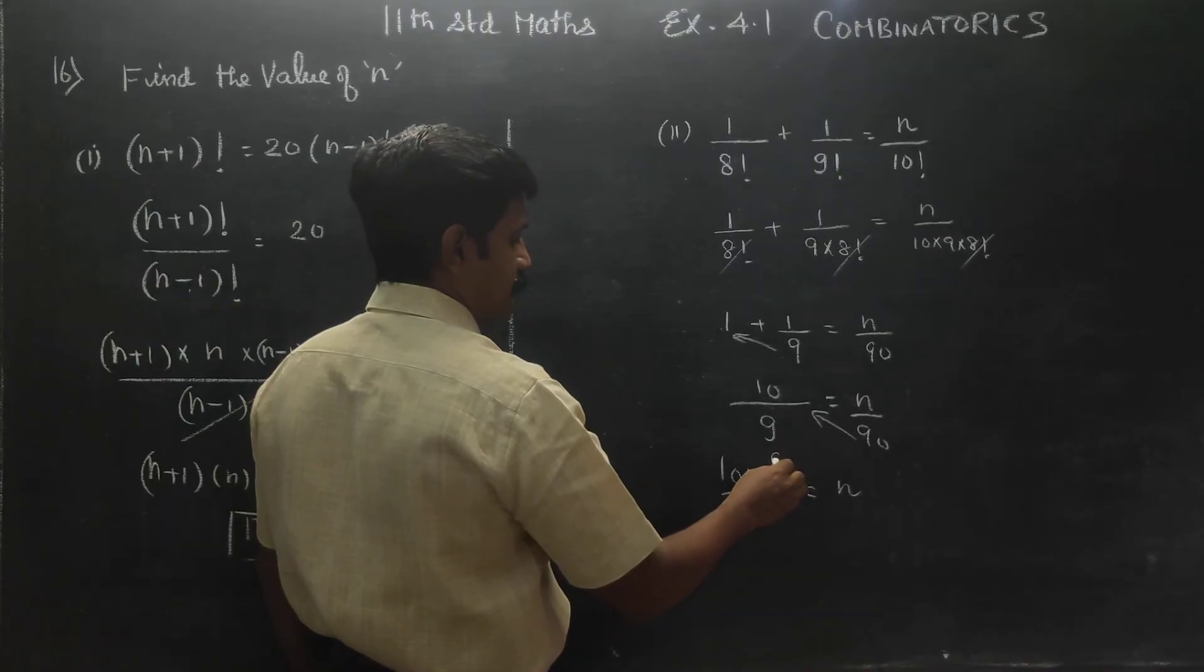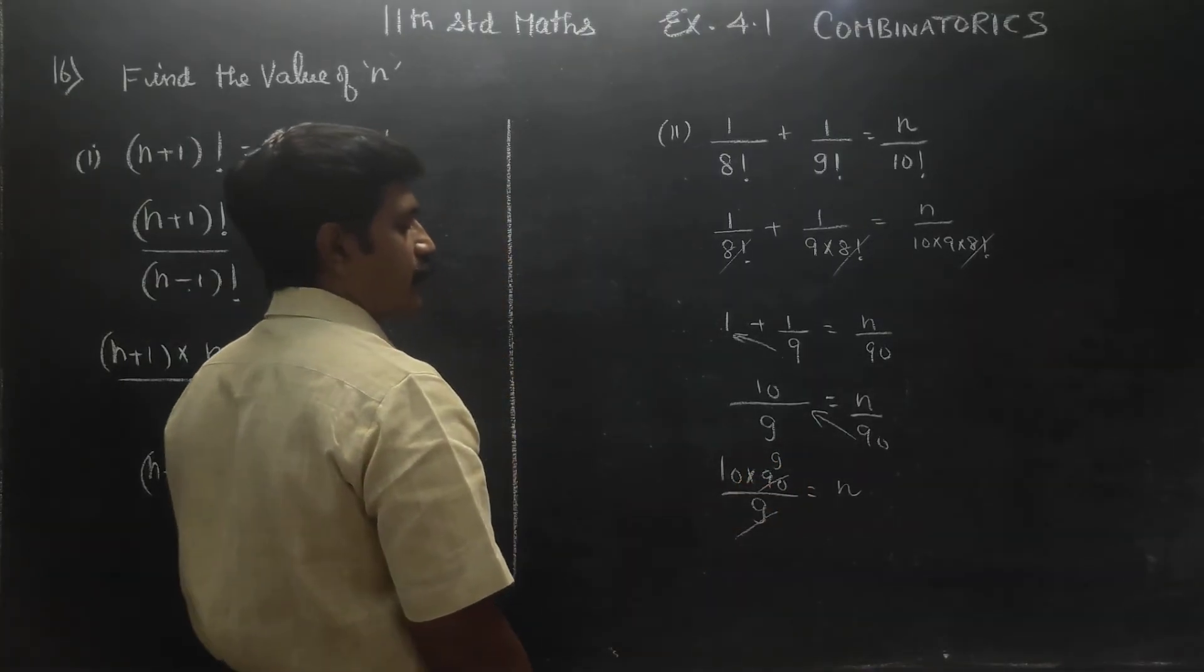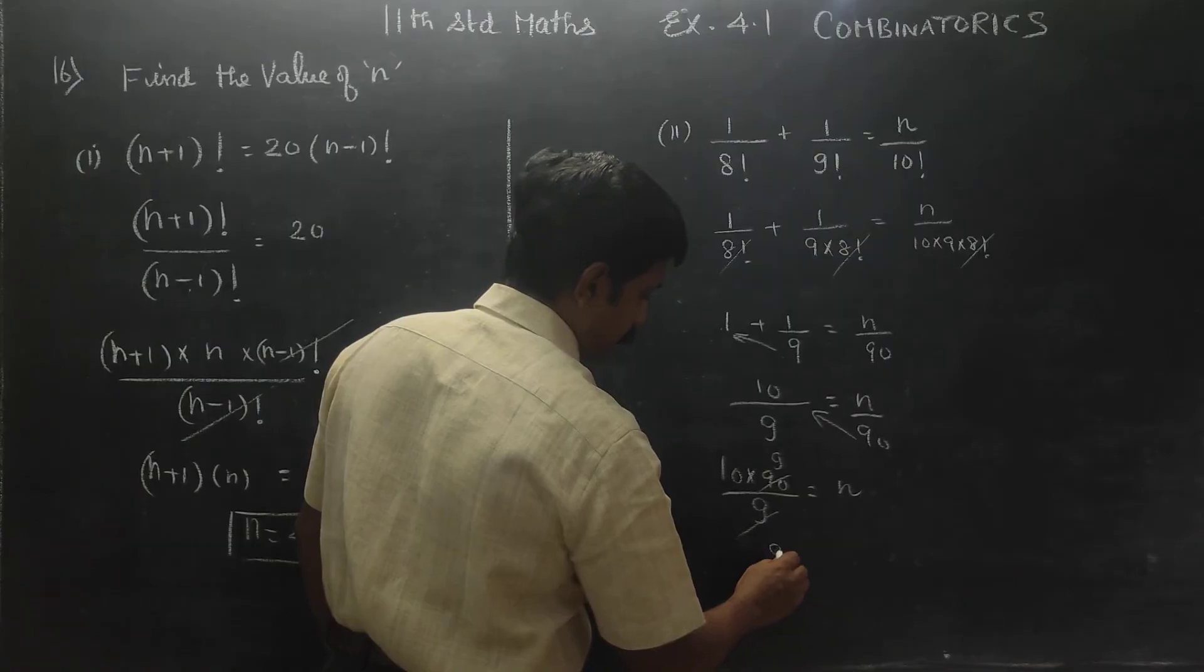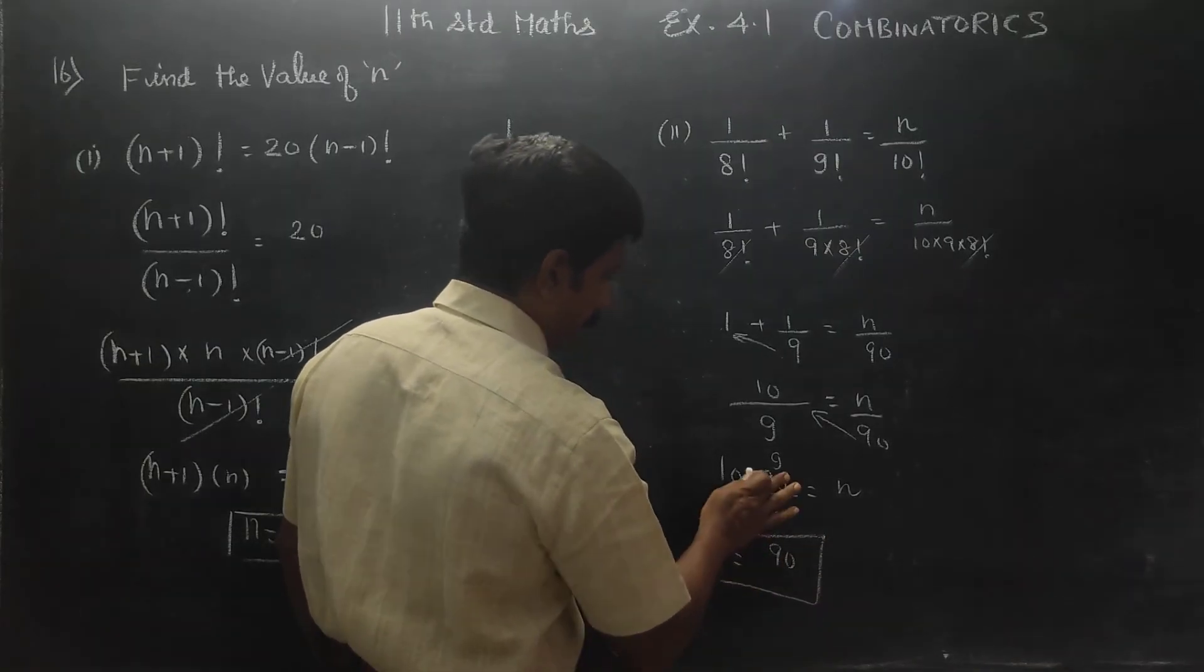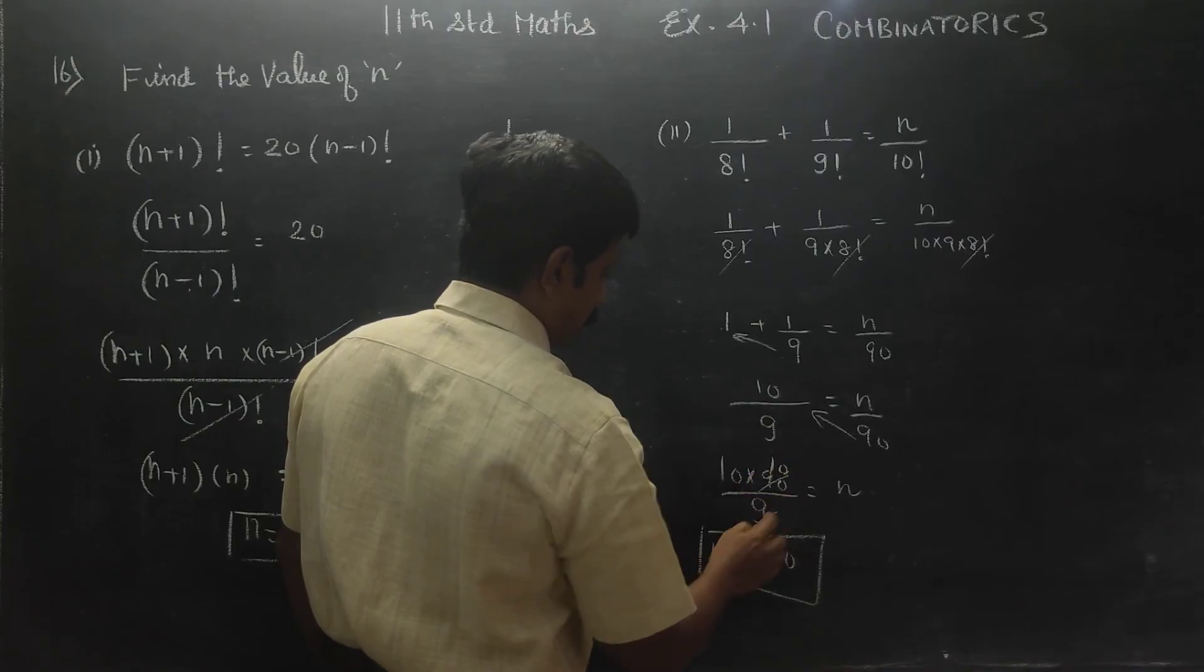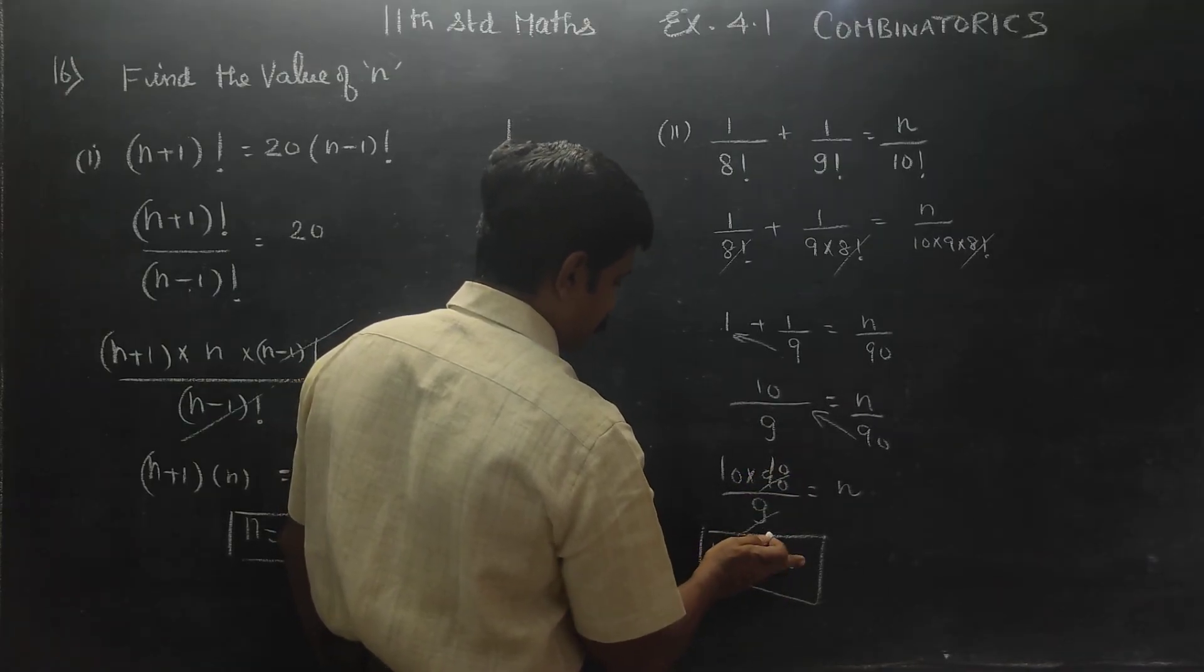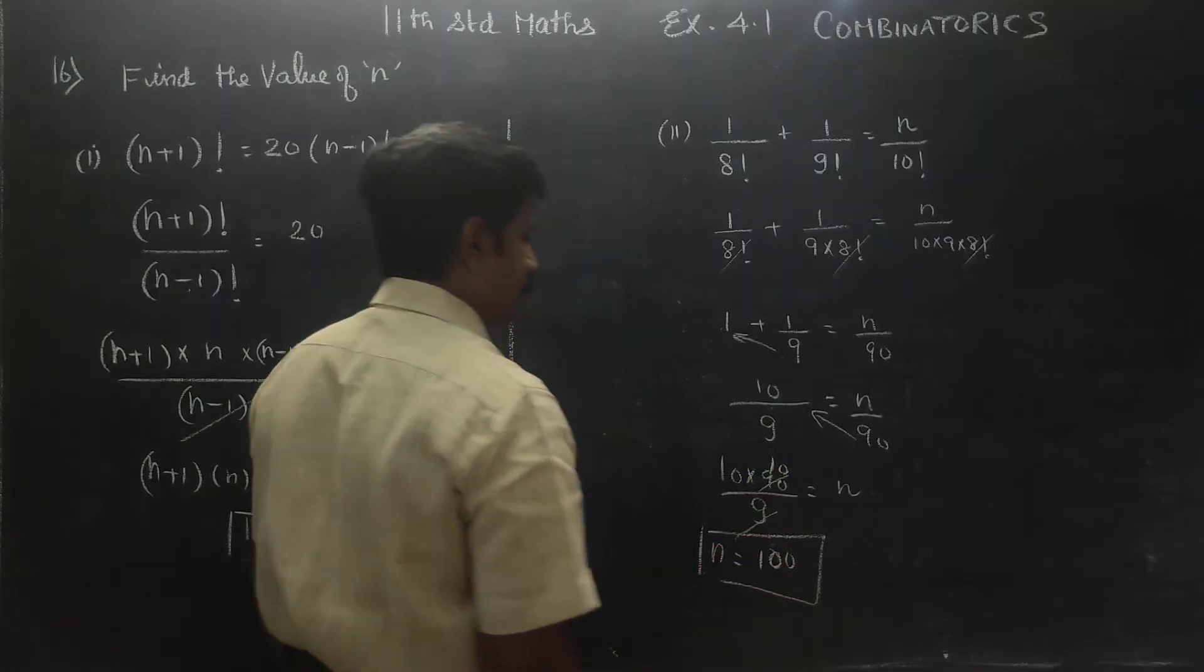9 times cancel. 9 times are 90. N is equal to 90. 9, 10 times cancel. 9 and 10 times are 100. 100 is your answer.